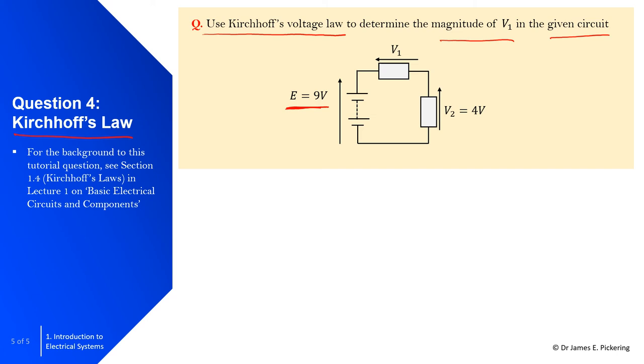If you recall Kirchhoff's law, at any point, the algebraic sum of the voltage across any loop, and you've got effectively a loop here, i.e. the potential difference in a circuit, is zero. So that means this: the source here, the source voltage, take away V1, take away V2, is going to be equal to zero.